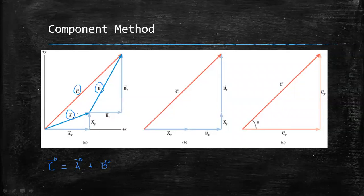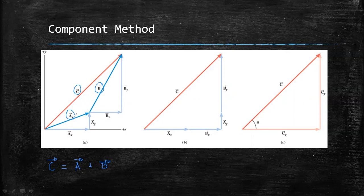Which means for vector A, we're going to get the x component Ax and the y component Ay. For vector B, we get the x component Bx and the y component By.